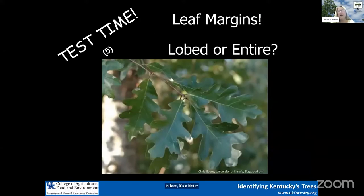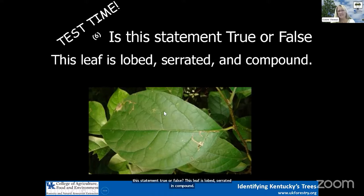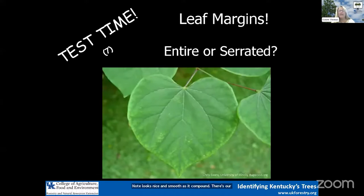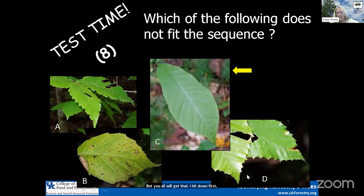Are the margins lobed or entire? We've got nice rounded lobes with deep sinuses — it's a white oak, so it's lobed. Is this statement true or false: this leaf is lobed, serrated, and compound? Do we see lobes? No, it seems entire. Do we see serrations? No, it looks smooth. Is it compound? There's our bud, here's the leaf stem, and there's one blade — so it is false. Is this leaf entire or serrated? We don't see any serrations — it looks smooth, so we've got an entire leaf. Which one doesn't fit this sequence? A has serrated margins, B serrated, C entire, and D serrated. So C does not fit — that is an example of a pawpaw leaf.